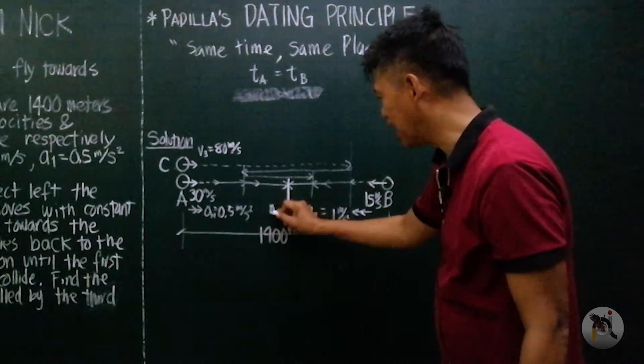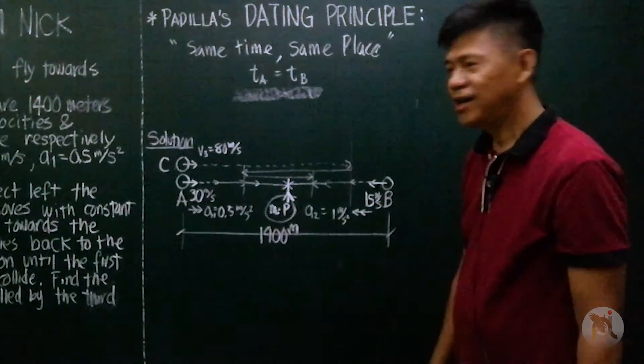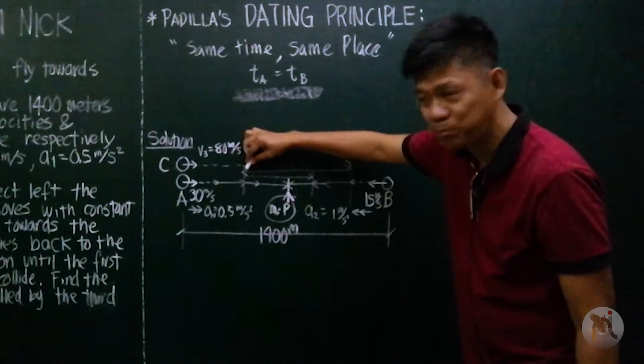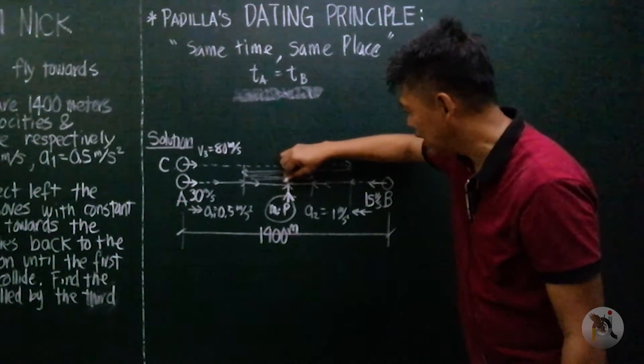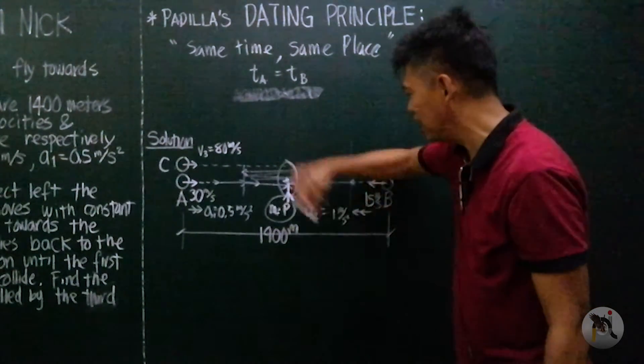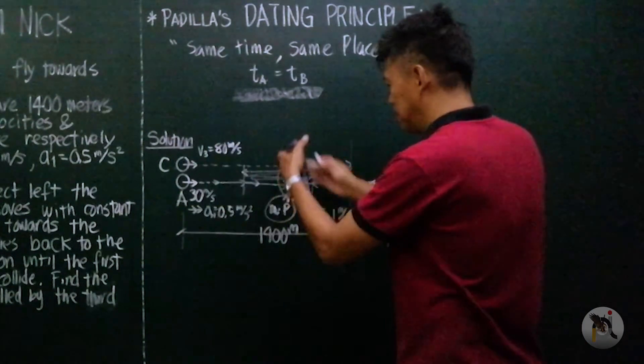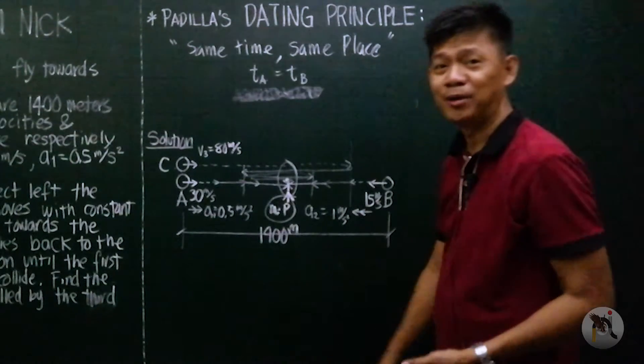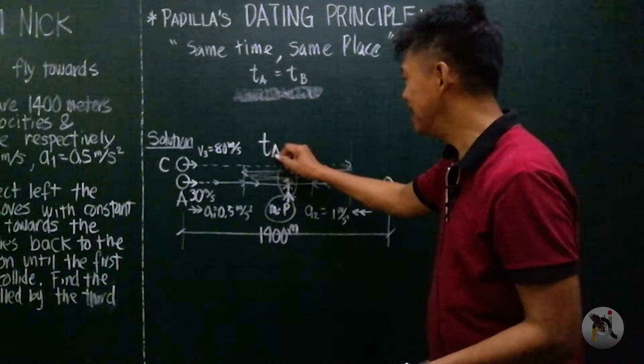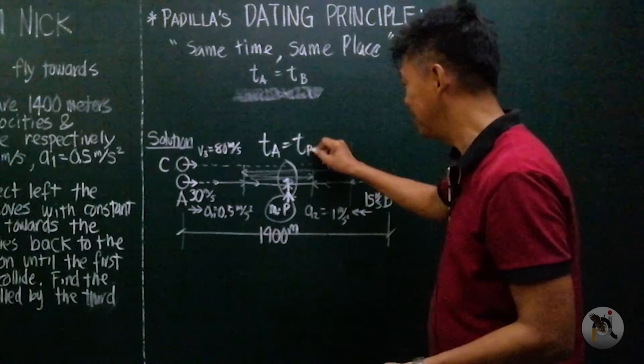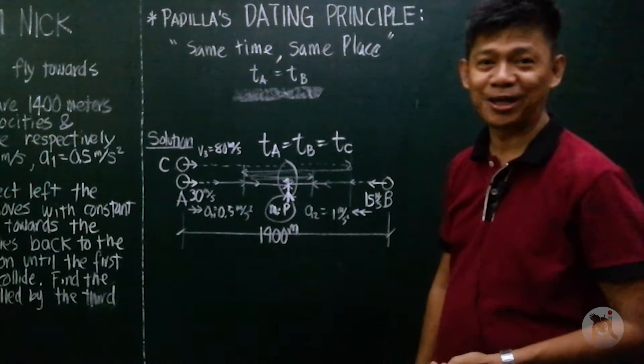So until such time that object A and object B meet here, this is our meeting point. So at the same time, your object C is also at this point. So the three objects meet here. They left here at the same time, they meet here at the same time. So what can we say here? T_A equals T_B equals T_C. Their time are equal.